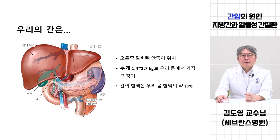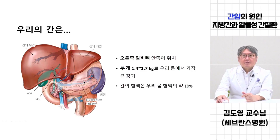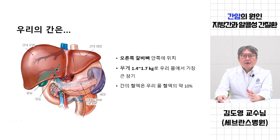쓸개가 간 아래쪽에 붙어있는데, 쓸개 역할은 간에서 만들어진 담즙을 모아놨다가 농축시켜서 십이장으로 흘려보내면, 우리가 음식물 먹고 위하고 십이장을 통과한 음식물이 담즙에 의해서 소화가, 특히 지방소화를 돕는 역할을 하는 것이 담낭 쓸개집의 역할이 되겠습니다. 소장, 대장에서 엄청난 혈액이 문맥으로 와서 간으로 들어가서, 장에서 소화 흡수된 영양성분이 간에서 대사되고 변화되고 해서 3대 영양소인 탄수화물, 지방, 단백질이 여기서 저장되기도 하고 서로 변환되기도 한다.